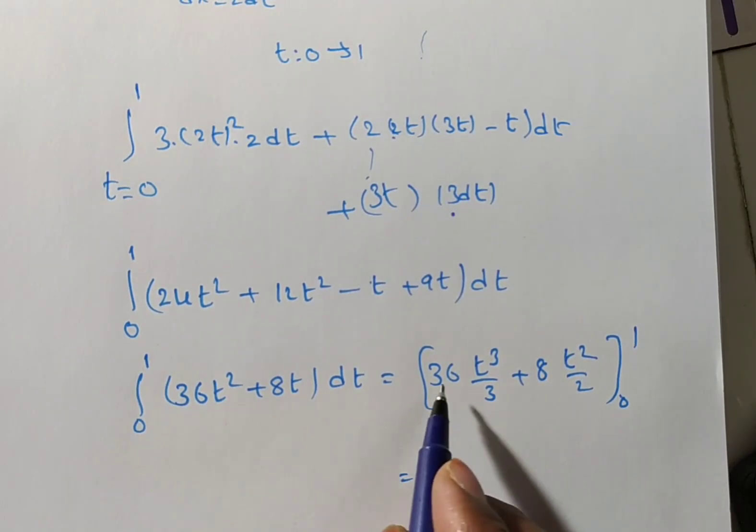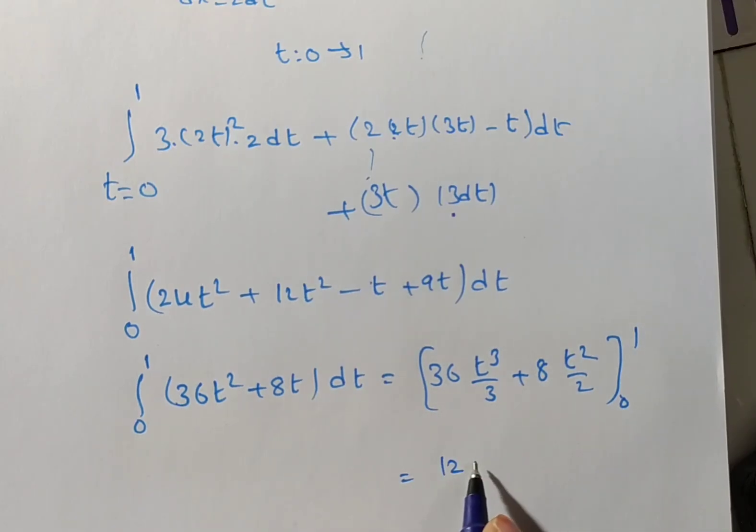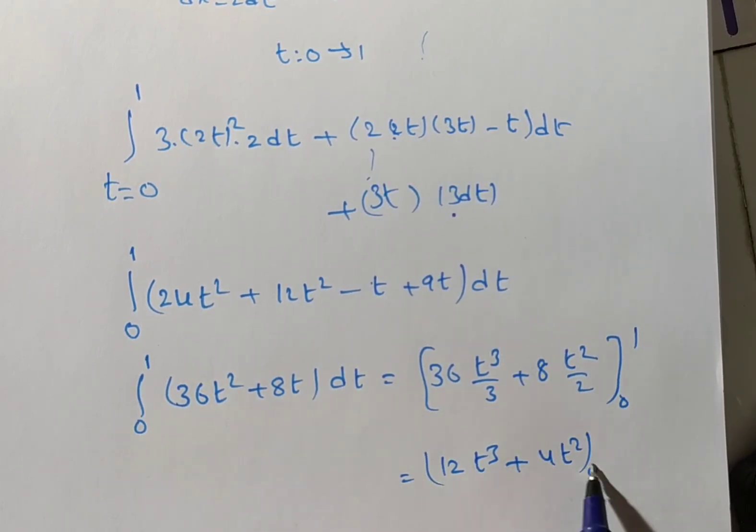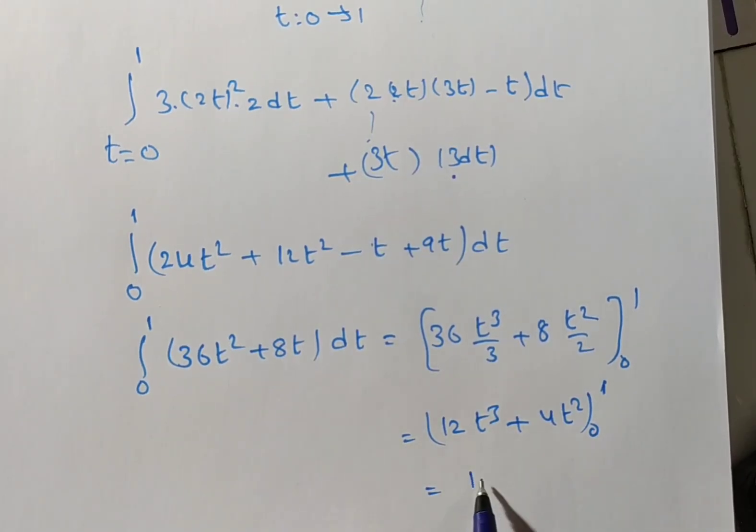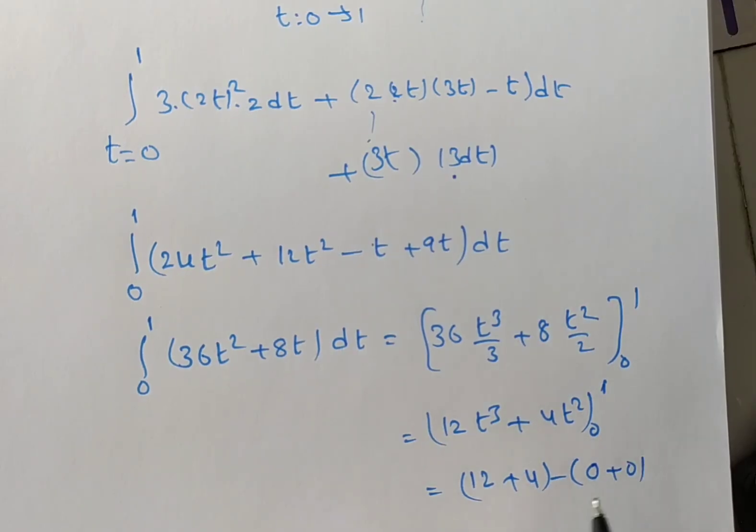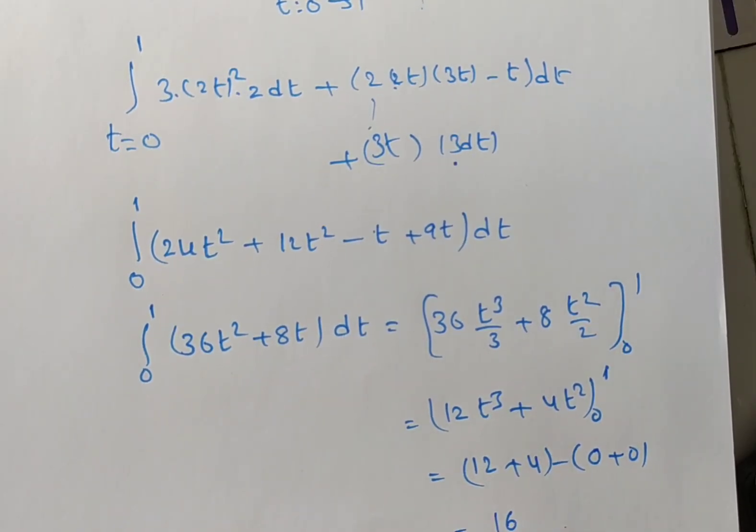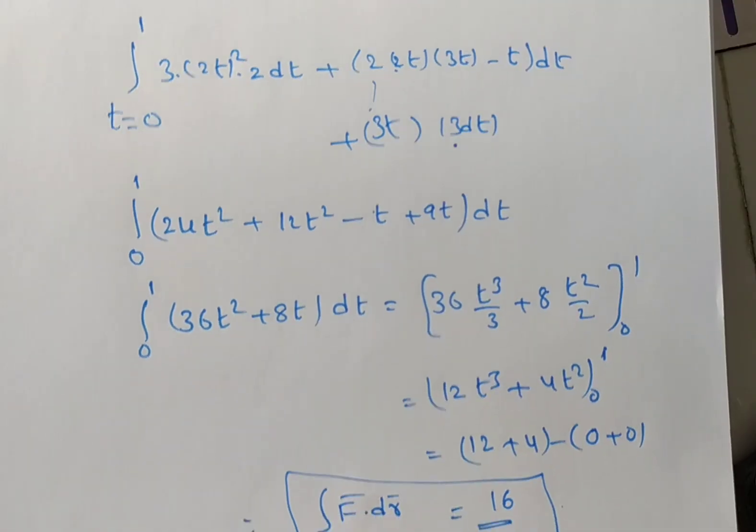Now, 3 1s are 3, 3 12s are 36. So, 12t cube plus 2 1s are 2, 2 4s are 8, 4t square. Now, we need to substitute limit. Here I have substituting. Upper limit minus lower limit. Upper limit if you are substituted, 12 into 1 cube is 1 only. Plus 4 into 1 is nothing but 4. Upper limit over minus lower limit. In place of t, we have to substitute 0. So, 0 plus 0 again. So, what I will get here? 16 minus 0 is nothing but 16. Therefore, the work done F bar dot dr bar is equal to 16. This is the final answer.